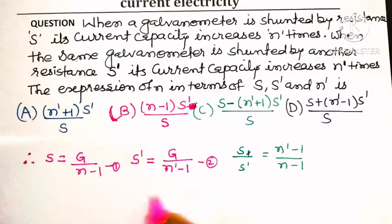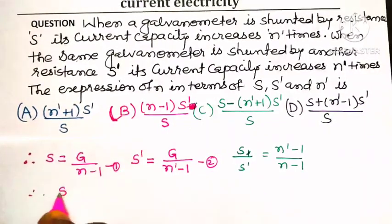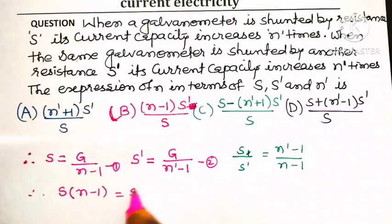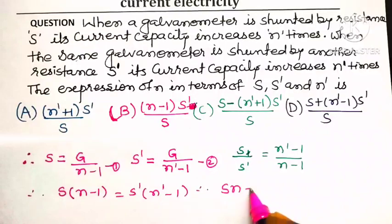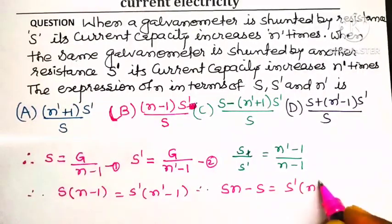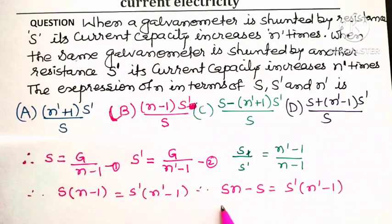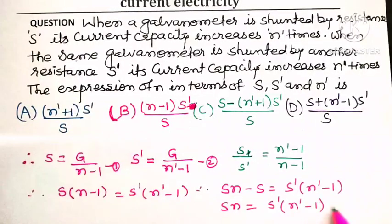Now let us cross-multiply. Therefore, S(n - 1) = S'(n' - 1). Expanding: S·n - S = S'(n' - 1). Taking S·n on one side: S·n = S'(n' - 1) + S.